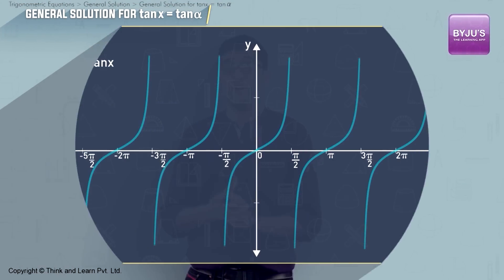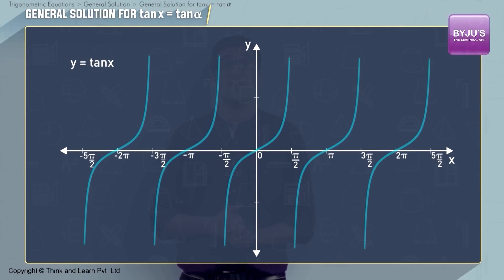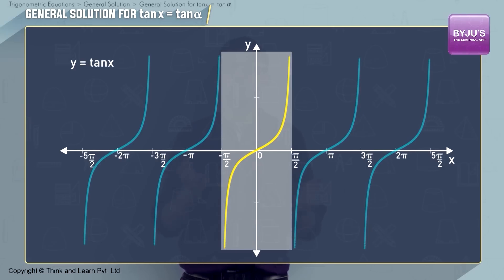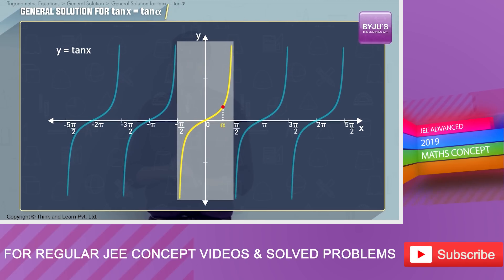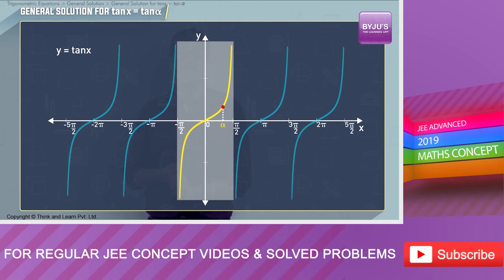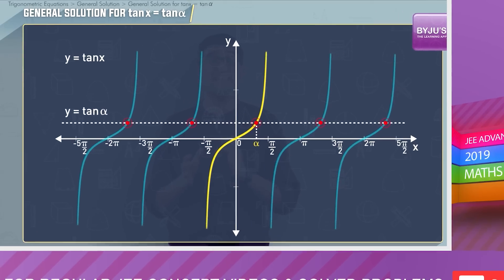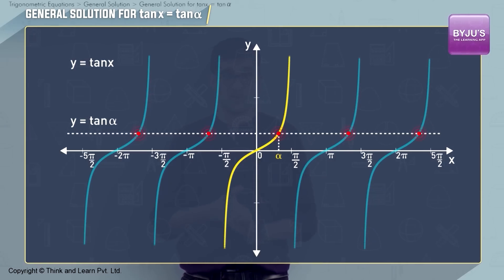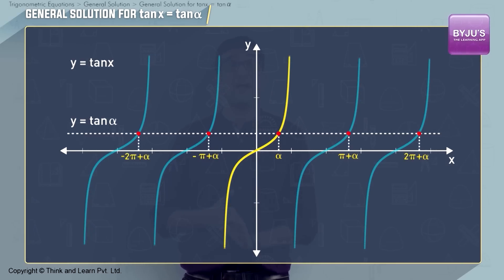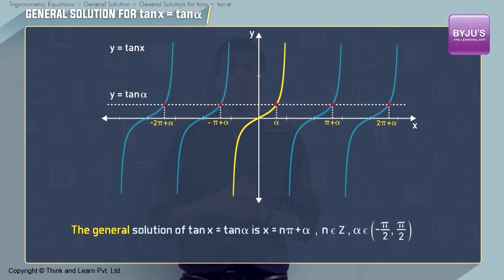Look at the graph of the tan function now. We will choose an interval which covers the entire range of the tan function, and that interval is (-π/2, π/2). Let us take an angle α in this interval. To find the general solution of tan x = tan α, we draw the line y = tan α. All the points where this line intersects the curve are the solutions, and all these points are at nπ + α. So the general solution of tan x = tan α is x = nπ + α.